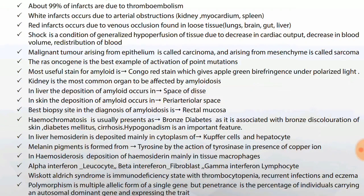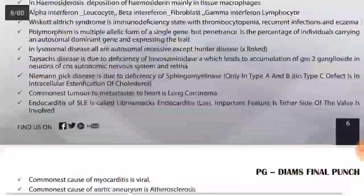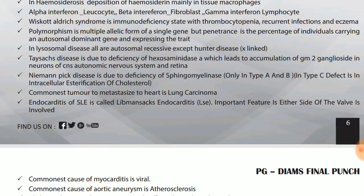Wiskott-Aldrich syndrome is an immunodeficiency state with thrombocytopenia, recurrent infections and eczema. Polymorphism is multiple allelic forms of a single gene, but penetrance is the percentage of individuals carrying an autosomal dominant gene and expressing the trait. So: percentage of people is penetrance; polymorphism is multiple allelic forms of a single gene.